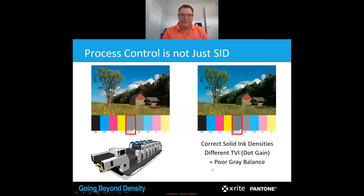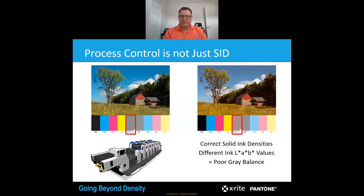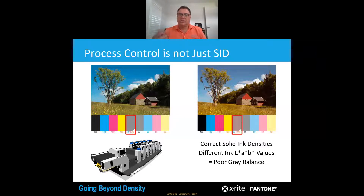When you're looking at densities from the first image, the correct ink density is there — but the grey balance on this product is incorrect, which means the sample on the right has a yellow hue. In this second instance, once again the ink density is correct, but it has even poorer grey balance and no longer looks like the colour standard. So density is part of it, but there is a lot more involved in ensuring that the output of your press is the correct colour than just density.